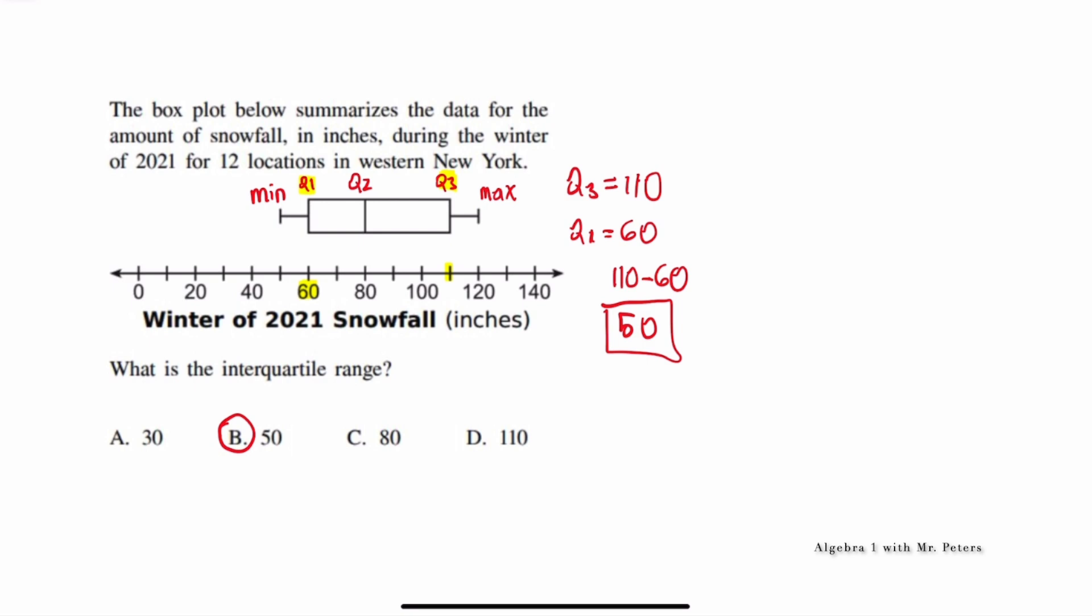And before we go to the next problem, please be mindful of the other words that they may use, such as the median, upper quartile, and lower quartile. Sometimes they'll switch between those vocabulary and what you see on my screen. So please know which refers to which part of the box and whisker plot.